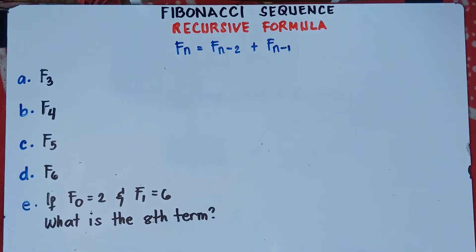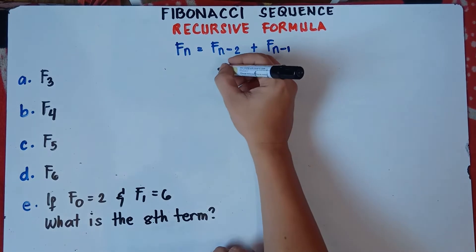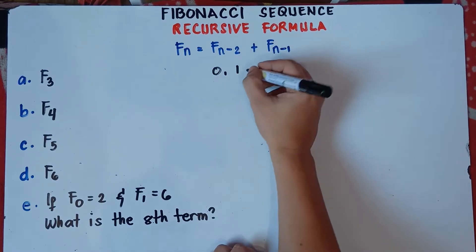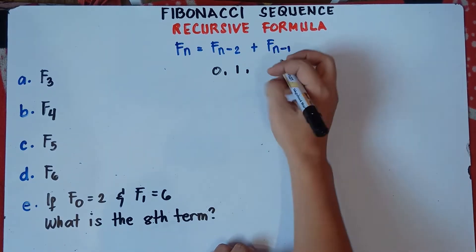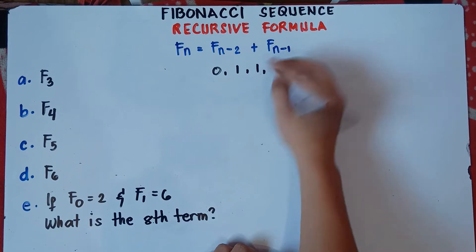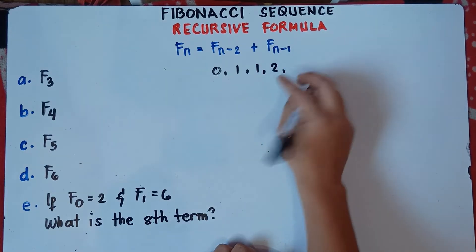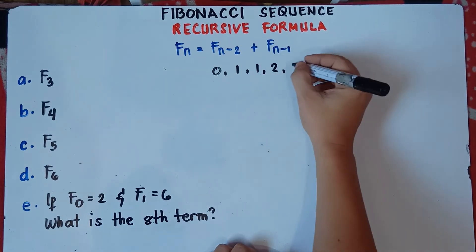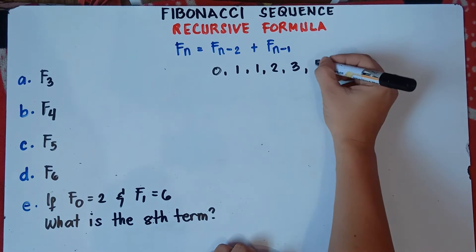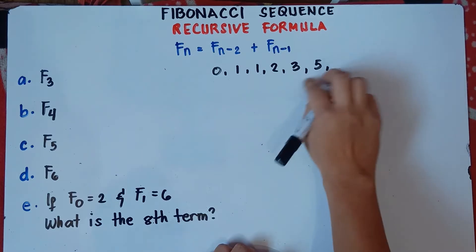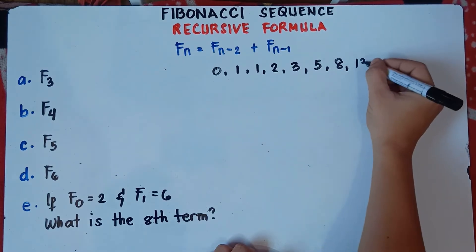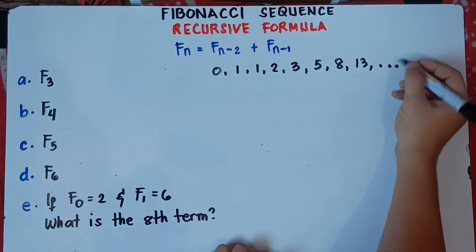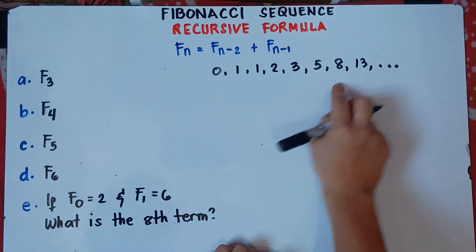What will be the patterns here? Of course, we will start at 0 and 1. So this will be 0, 1. Then you will add the preceding terms: 0 plus 1 is 1; 1 plus 1 is 2; 1 plus 2 is 3; 2 plus 3 is 5; 3 plus 5 is 8; 5 plus 8 is 13. To get the next number, just simply add the preceding terms.